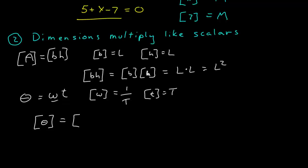So the dimension of an angle, in this case, is the dimension of these terms, omega t, which is the dimension of omega times the dimension of t, which is 1 over time for omega times time. And since they multiply like scalars, these cancel, and I get 1.